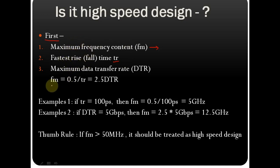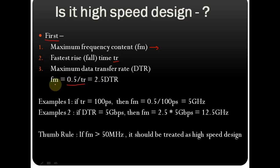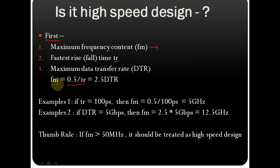The maximum frequency content fm is given by: fm = 0.5 / tr, where tr is the rise time. The other relationship is fm = 2.5 × DTR. So if you know the rise time you can find the frequency, and if you know the DTR you can find the maximum frequency.